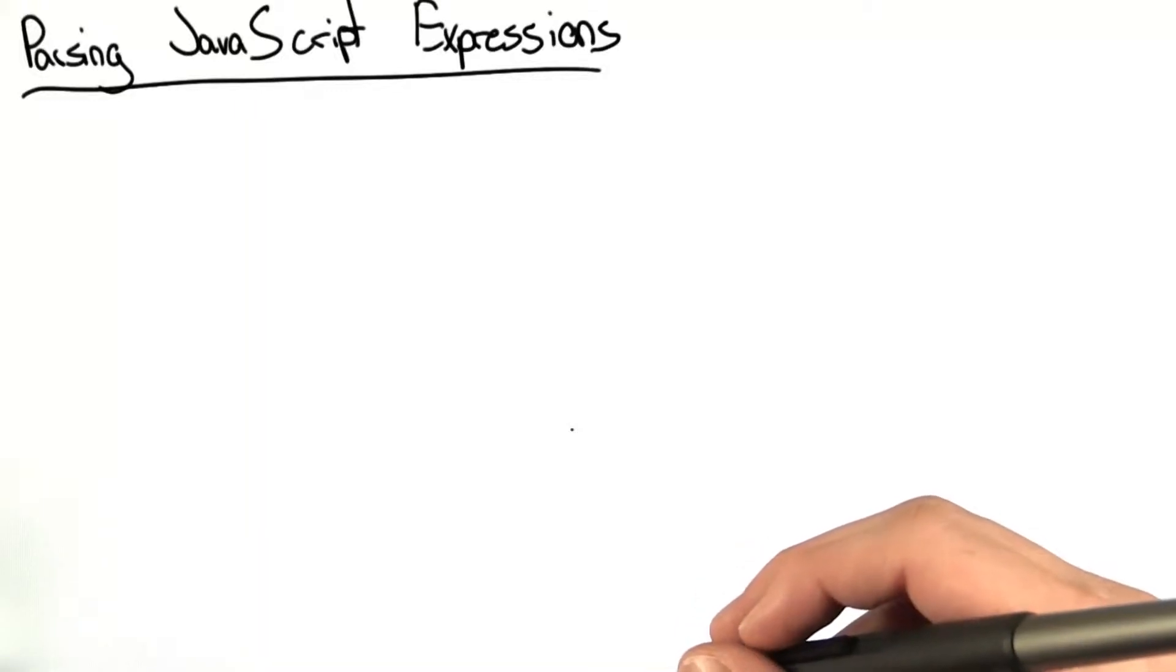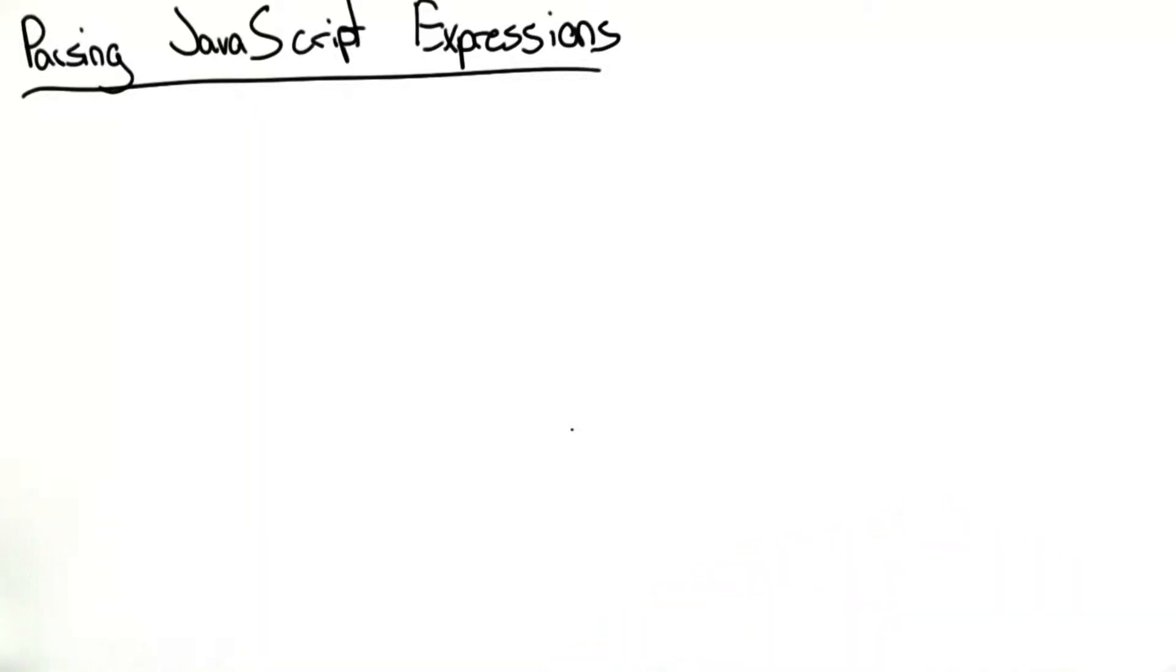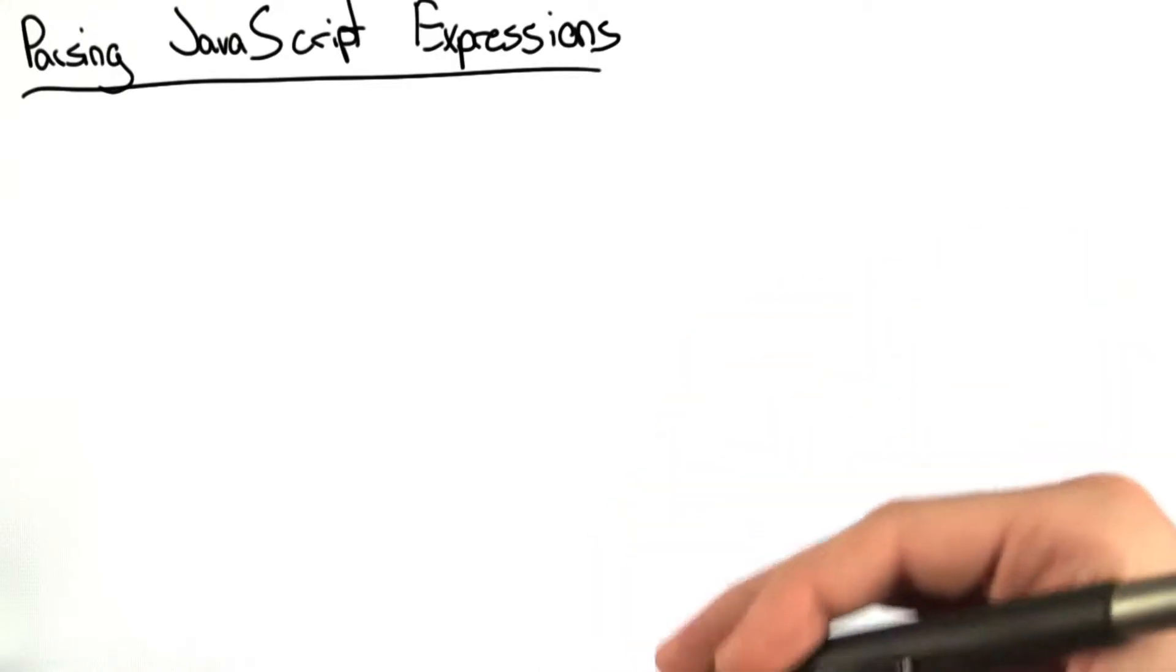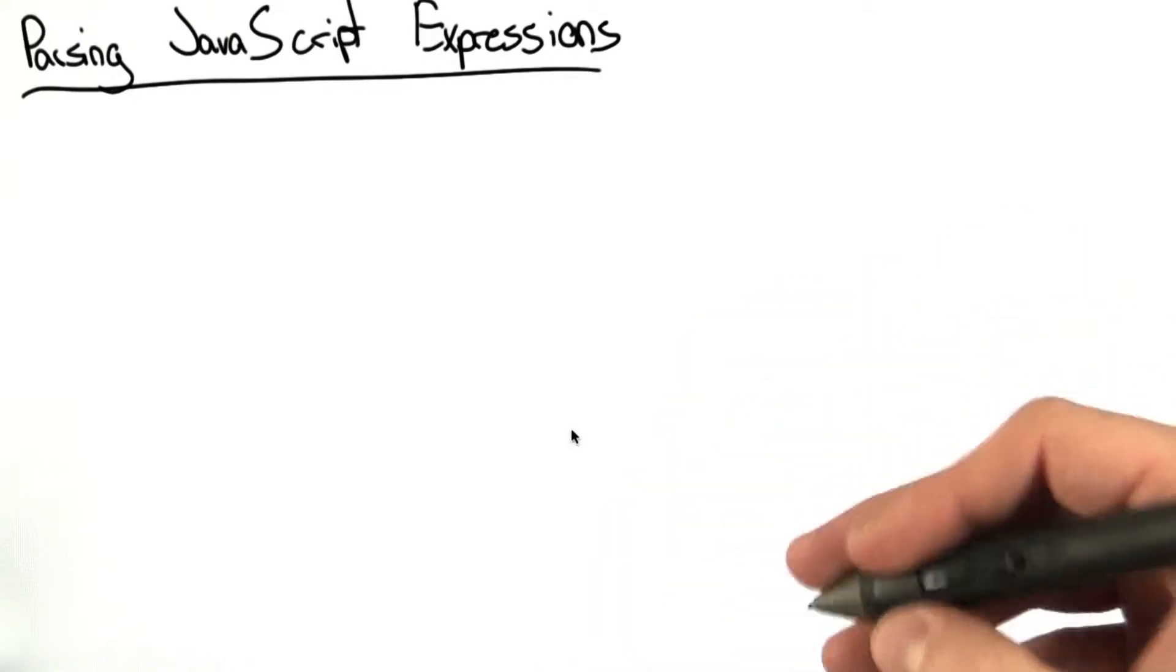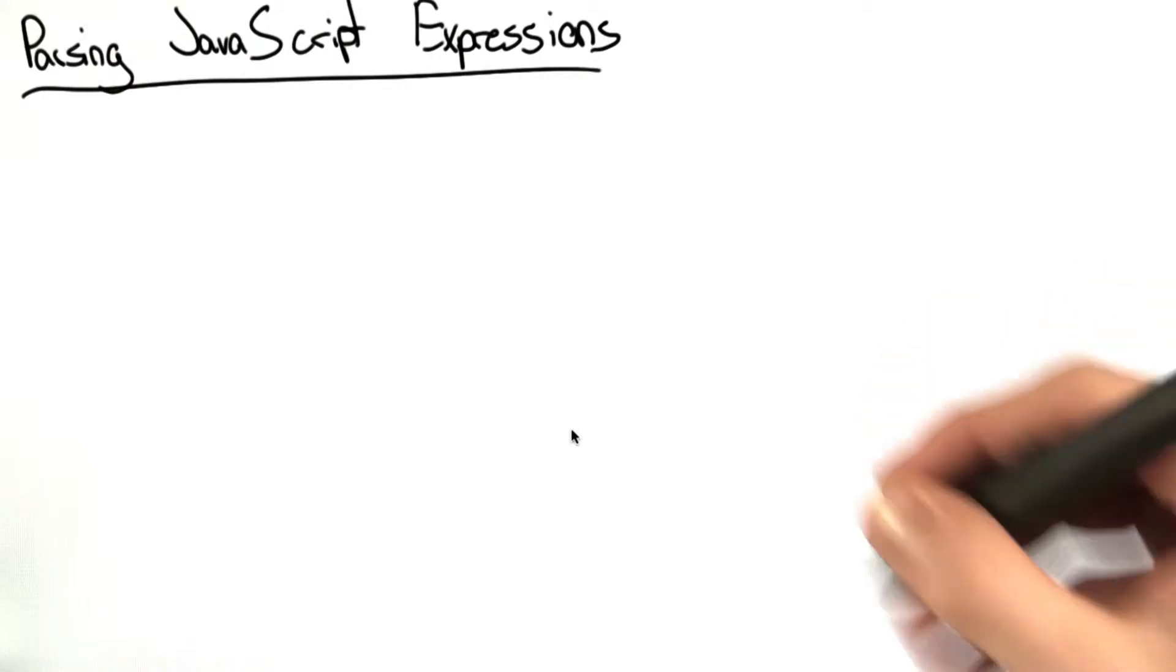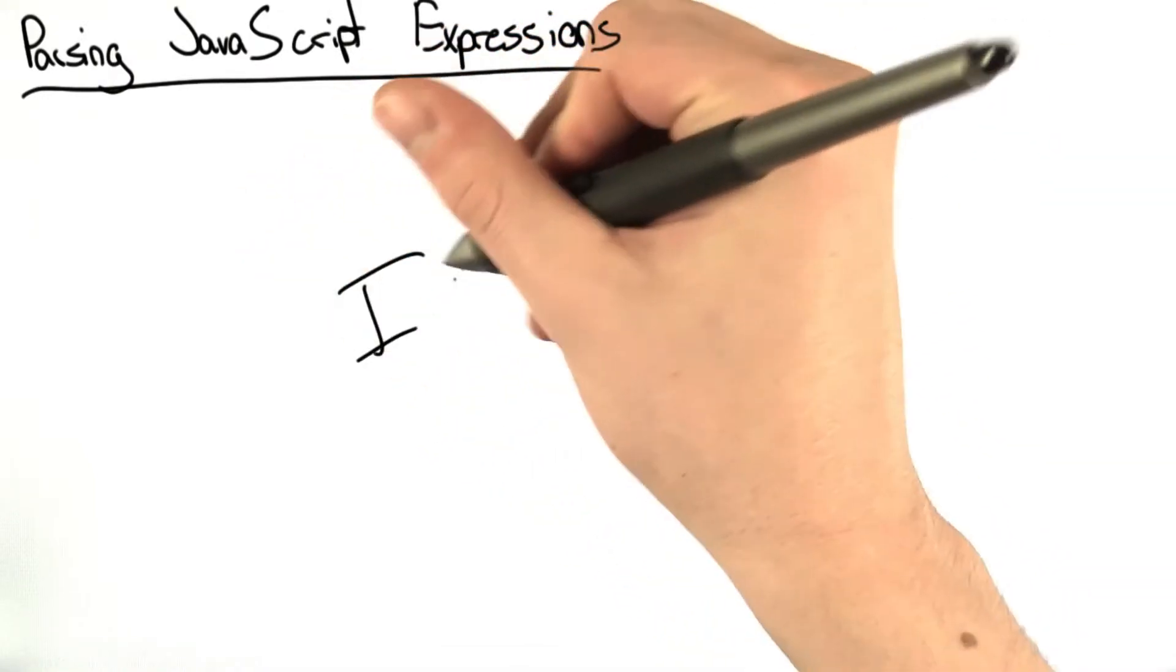In this problem, we're going to build the part of our JavaScript parser that handles JavaScript expressions. This is pretty straightforward, just like the last problem, where we're essentially enumerating all the rules that we've predefined for our JavaScript language. So let's go right to the IDE.